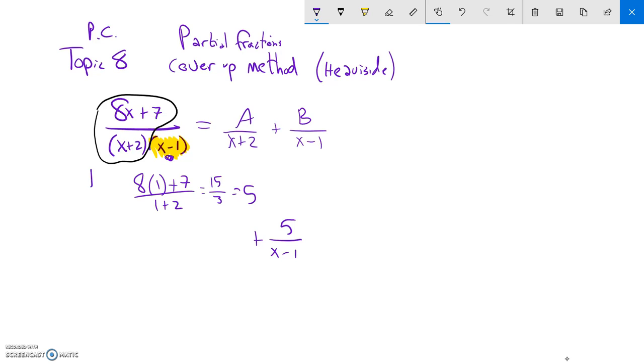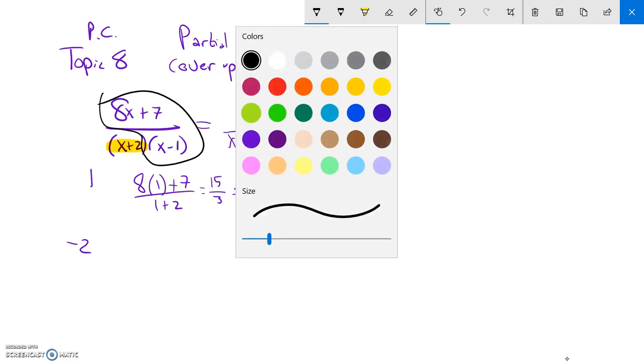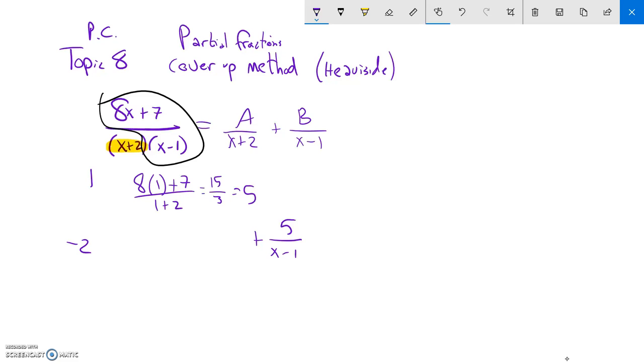So my next cover up, then, I would cover up the X plus 2. That means I use negative 2. I use its zero. And I'm going to plug a negative 2 into that, everything but the part that would make me divide by zero. So 8 times negative 2 plus 7 over negative 2 minus 1. 8 times negative 2 is negative 16. Negative 16 plus 7 is negative 9. Negative 9 over negative 3 is positive 3.